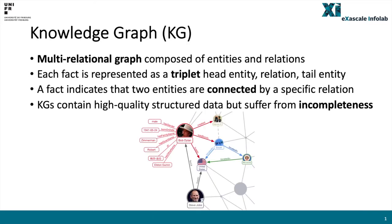A knowledge graph is a multi-relational graph composed of entities and relations. Each fact is represented as a triplet which is composed by a head entity, a relation and the tail entity, and the fact indicates that two entities are connected by one or multiple relations.